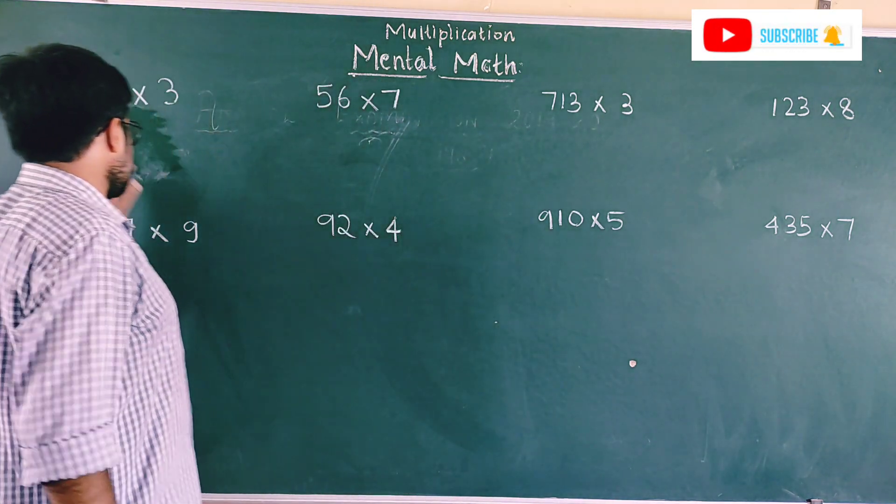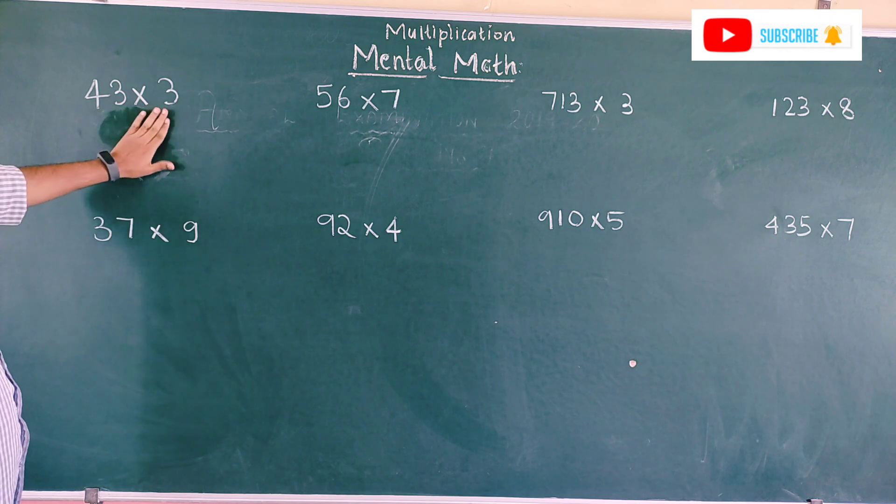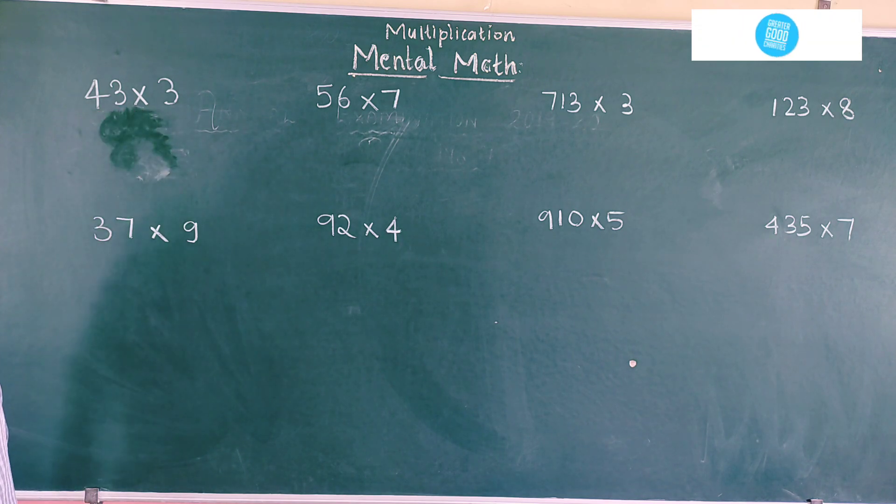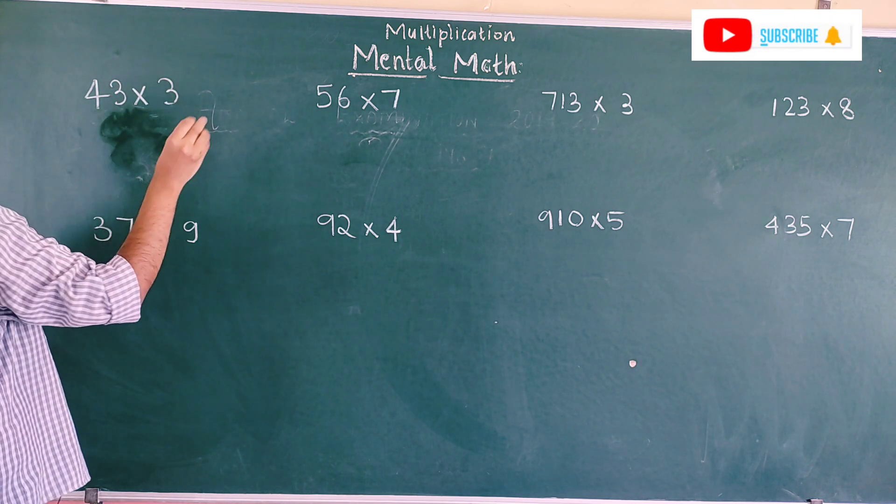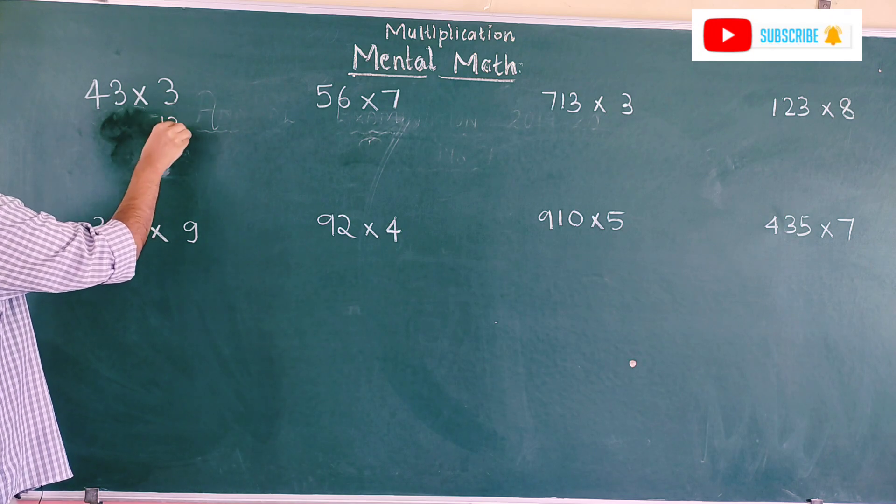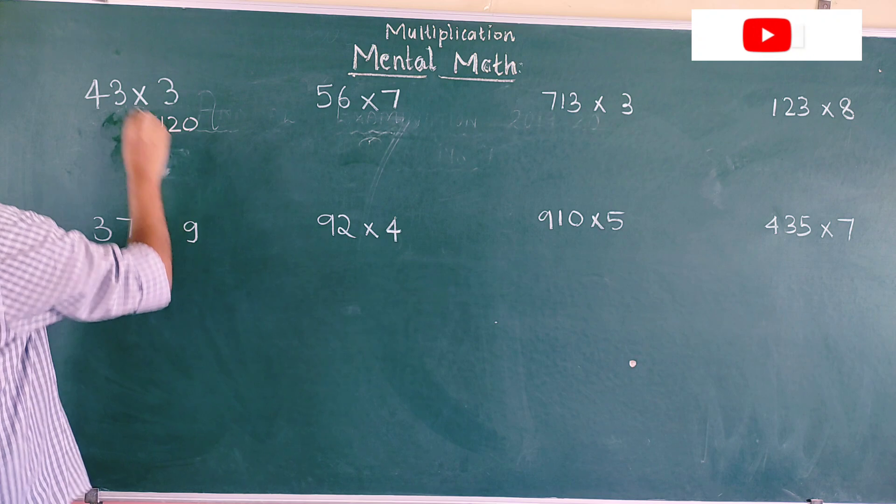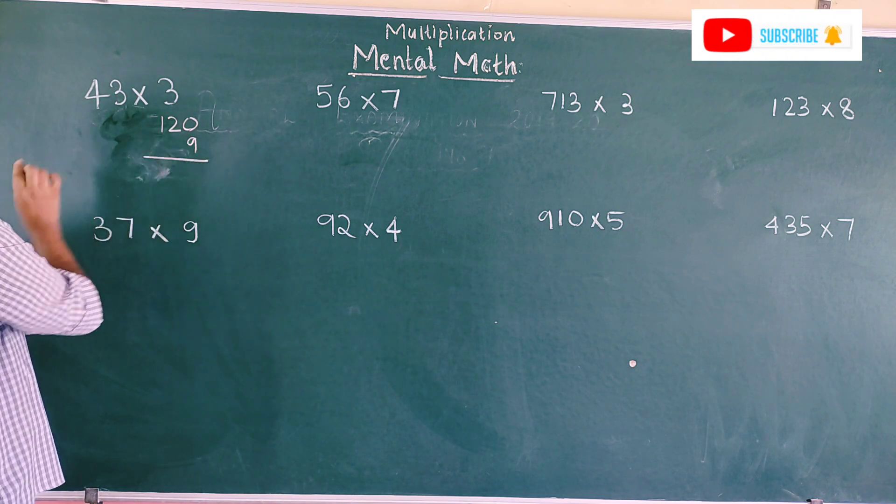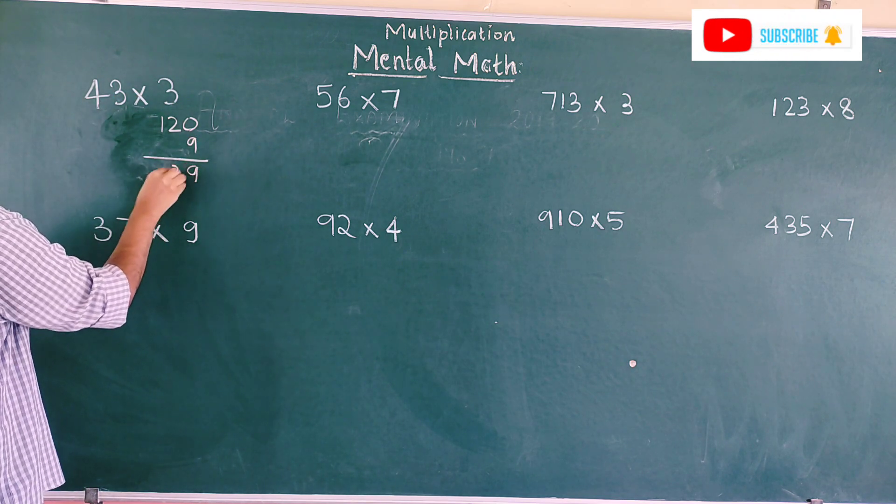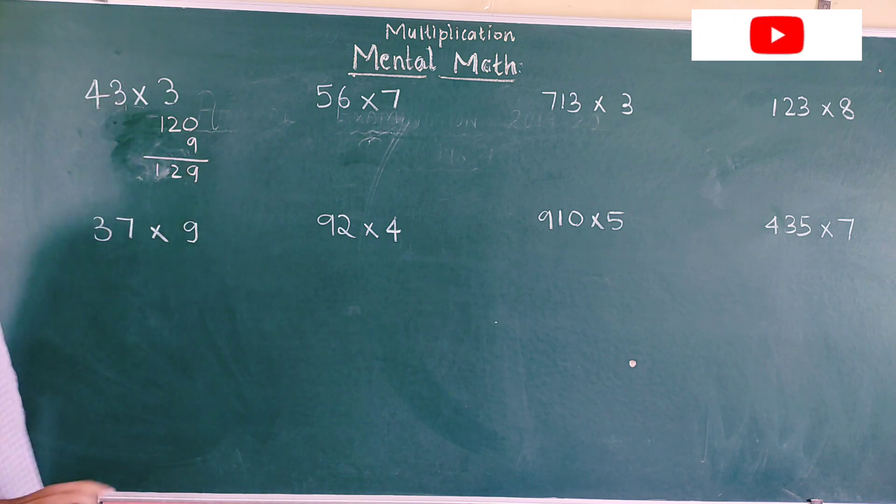The first problem here, 43 into 3. How to do it very quickly? 4 times 3 is 12. Put 1 zero. Why zero? Because 4 is at tens place. Then 3 times 3 is 9. Put 9 at the ones place. Then just add 9 to 1. So 129 will be the answer for this.